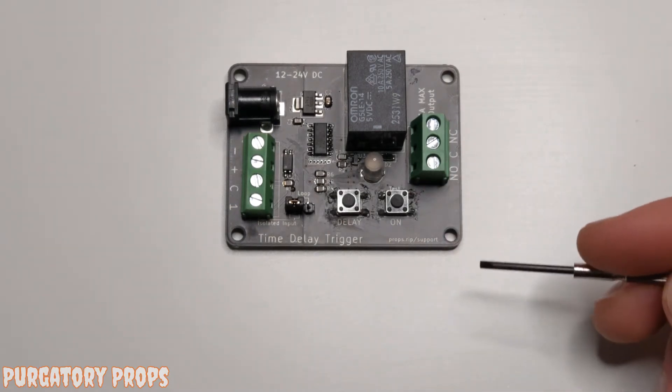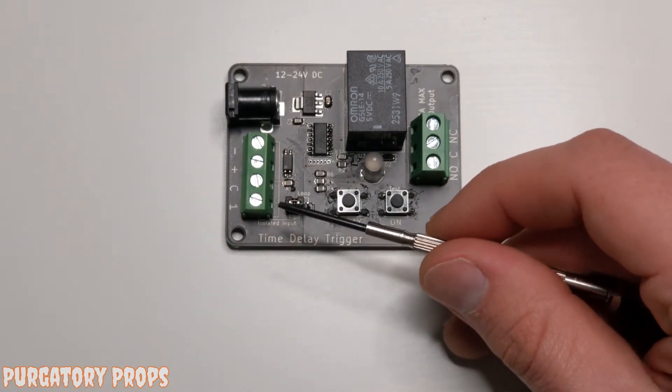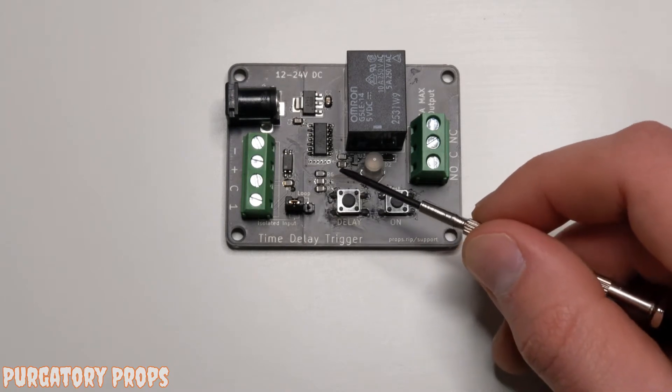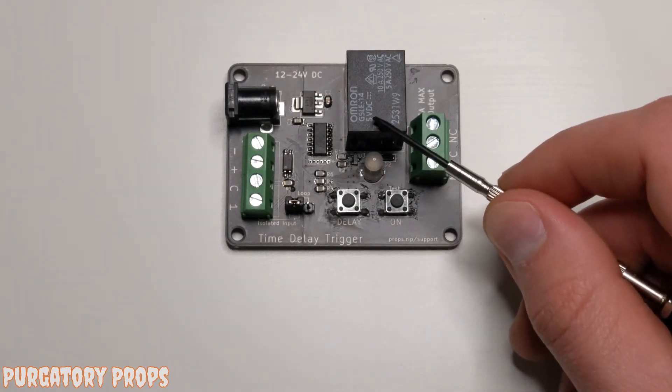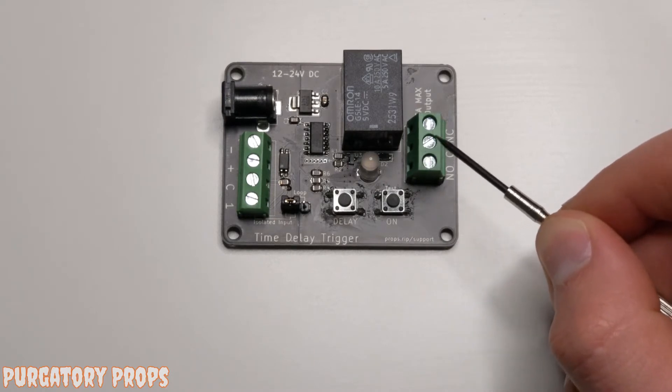So the basic function for this controller is it gets triggered or in continuous loop mode, a programmable delay happens, and then the relay turns on. The amount of time that it's on is also programmable.